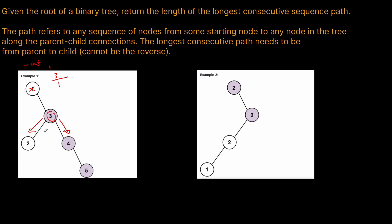We go to node 2 and see the difference between 2 and 3 is negative one, so that doesn't work. Then we go to node 4 — the difference is 1 because 4 minus 3 is 1. So we have a viable chain and increment the count to 2, updating the global maximum to 2. Then we go to node 5, where the difference between 5 and 4 is 1, so we update the chain to 3 and the global maximum to 3. Node 5 has no children, so the DFS ends and we bubble up the recursion, returning 3.